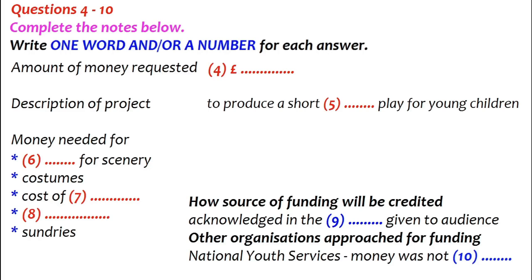Now the next bit is about the project itself — what we're applying for funding for. So first of all they need to know how much money we want. The maximum's 500 pounds. I think we agreed we'd ask for 250, didn't we? Okay, there's no point in asking for too much — we'll have less chance of getting it. Then we need to say what the project and the activity is. So we could write something like: to produce a short interactive play for young children.